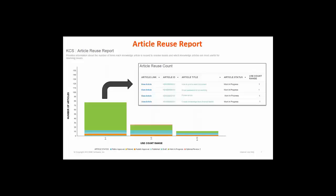The next report is the Article Reuse Report. This report displays the number of times articles are reused in each status throughout the entire article lifecycle. The reuse count indicates the number of incidents resolved using knowledge articles. A higher reuse count indicates that the article is more useful to resolve incidents. The report helps you understand the usage pattern and the overall performance of articles as they move from one status to another. To view the detailed report you can click on the status area in the chart.